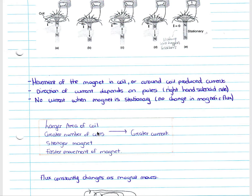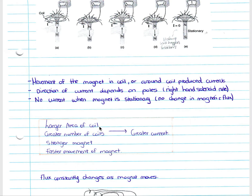There are several ways to change the amount of current flowing through the coil: using a larger area of coil will increase the current; using a greater number of coils will increase the current; using a stronger magnet — increasing our magnetic flux density — will increase the current; and moving the magnet through or around the coil at a faster speed or rate will increase the current flowing through the conductor.